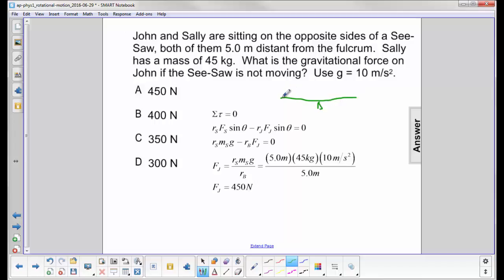We have Sally. We're going to put Sally over here and John over here. Sally's mass will try to rotate the seesaw this way, so that's a positive torque. John's will be a negative torque because he's trying to rotate it the other way. The sum of the torques has to equal zero because they're balanced out.